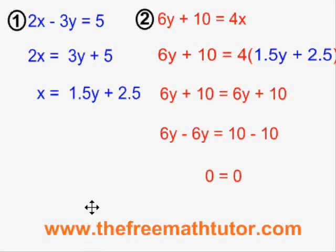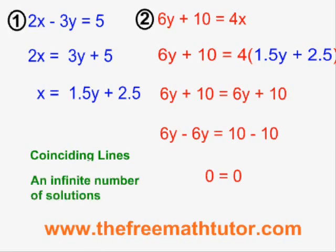The statement 0 equals 0 is my clue that I am dealing with coinciding lines. When asked for the type of lines, I write coinciding lines. And when asked for the solution set, I have to say an infinite number of solutions, because coinciding lines lying on top of each other share all of their points in common. Since lines extend infinitely in either direction, there are an infinite number of correct answers when asked what point do these two lines share. This is how we deal with a coinciding line situation when using the substitution algebraic method.